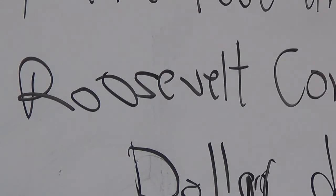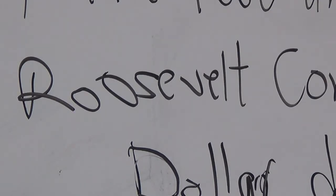So Roosevelt sat down and negotiated with the Japanese ambassador, and convinced the Japanese that they could voluntarily restrict immigration. He got the law that forbade immigration repealed, with the understanding that Japanese would voluntarily restrict immigration — some immigrants were allowed to come over, but they would be voluntarily restricted. Of course, eventually we fought a war with Japan, and when we did, Japanese Americans were rounded up and put in camps. We'll talk more about that later — whether or not it was justified.